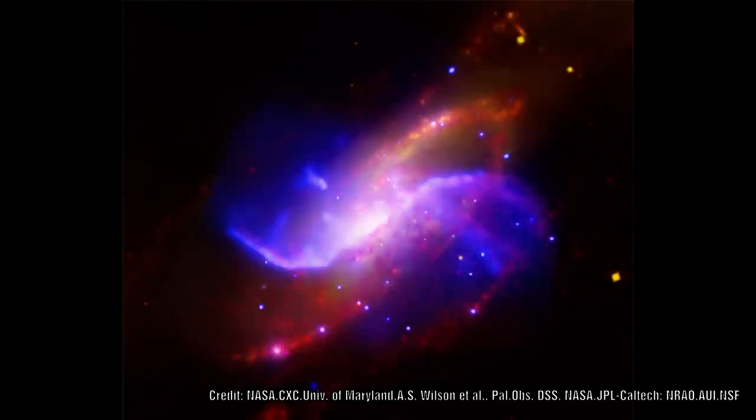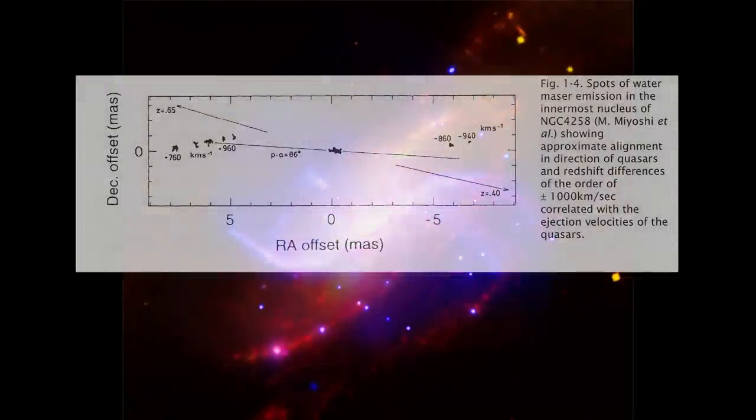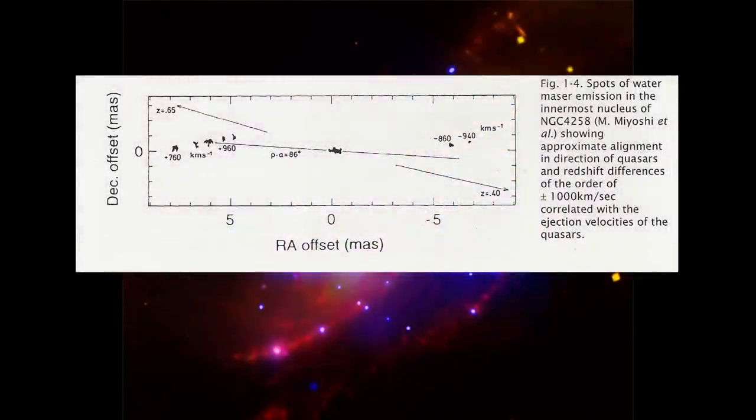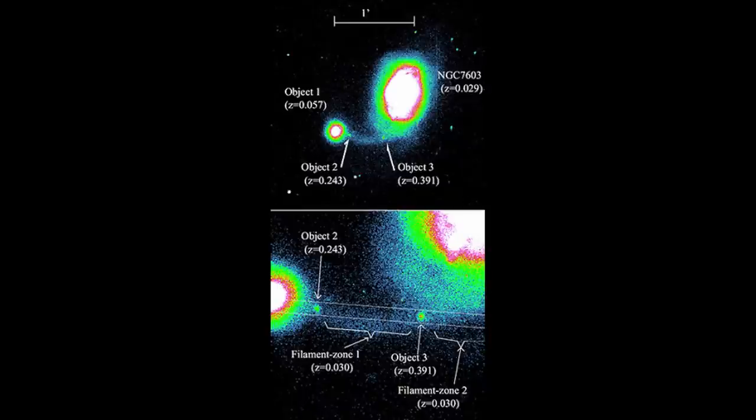The important point to take from this initial video is that there is a clear link with Seyfert galaxies having jets which eject material across either of the major or minor axes. And this material clearly moves away and many show both X-ray and radio sources along these filaments. This is accepted, this is accepted in mainstream.